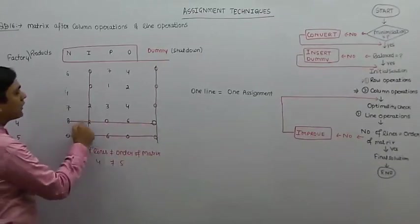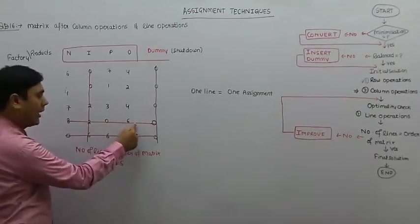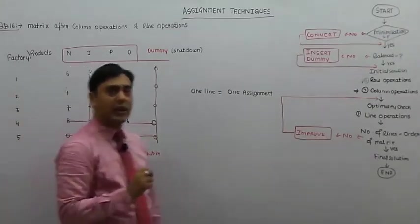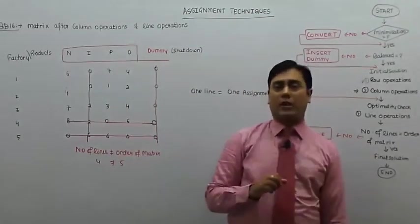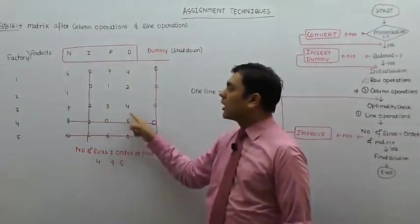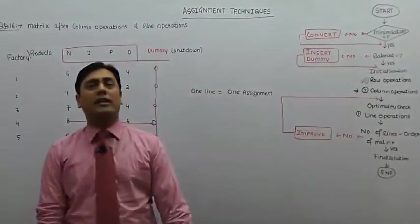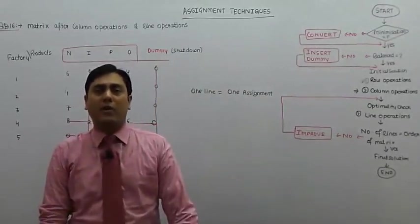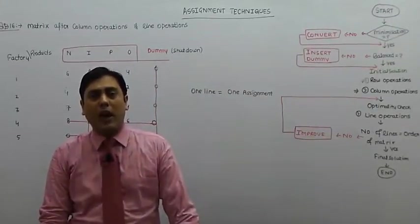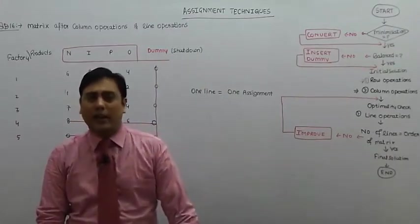तो product factory four और किसी product की तरफ नहीं देखेगी, इसलिए ये वाले सारे numbers हमारे लिए बेकार हैं। ऐसे ही factory five के लिए भी यही है। जो numbers lines के through cover होने से रह गए — एक important बात है — क्योंकि सारे जो covered elements हैं, वो present कर रहे हैं कि वो assignment वाली row या column में आते हैं। और अगर उस row या column में assignment हो गया तो one-to-one relationship के चलते हम उस row या column में और assignment नहीं कर सकते।